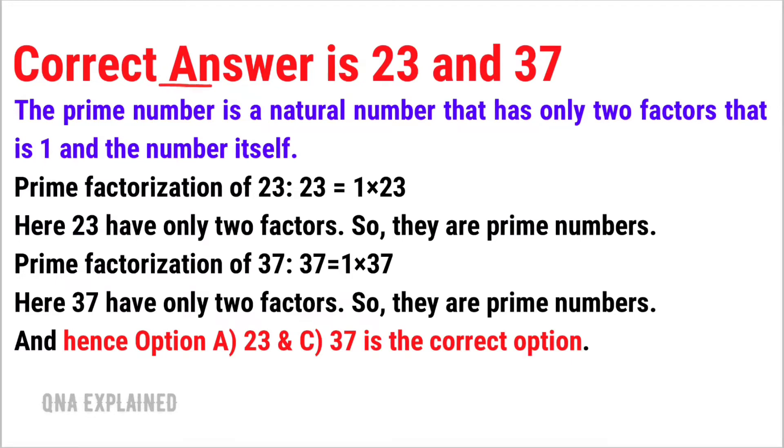Correct answer is 23 and 37. The prime number is a natural number that has only two factors that is